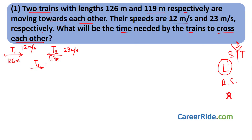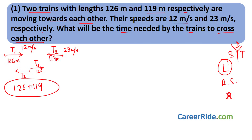What is the time needed by trains to cross each other? Train T2 must completely cross T1. So the total distance travelled is 126 plus 119 meters. No other external distance is given. Always remember: when two trains are crossing each other, the distance is nothing but the addition of the lengths of the two trains.